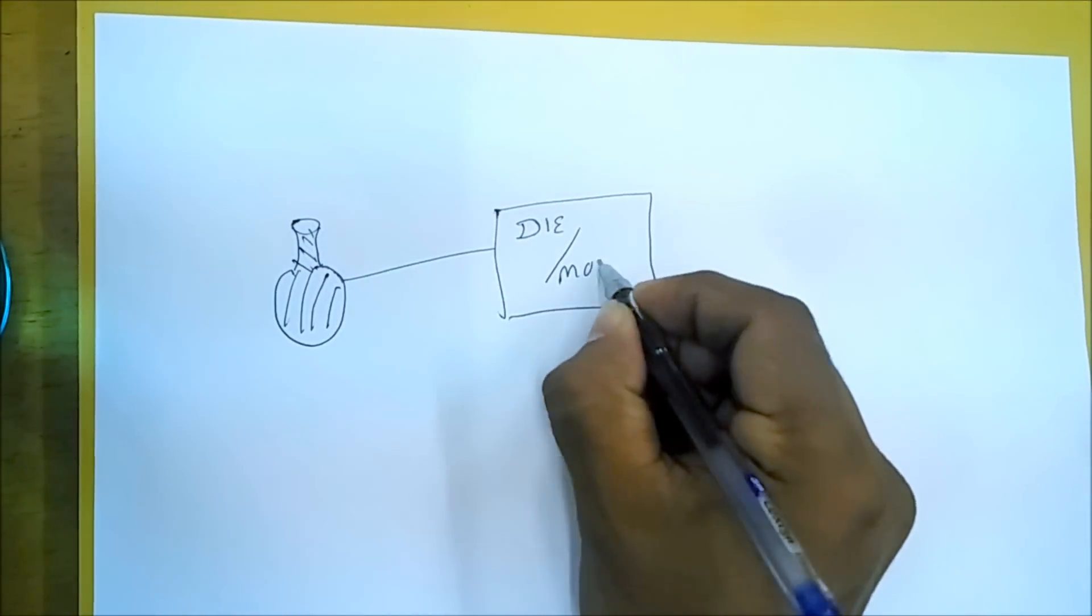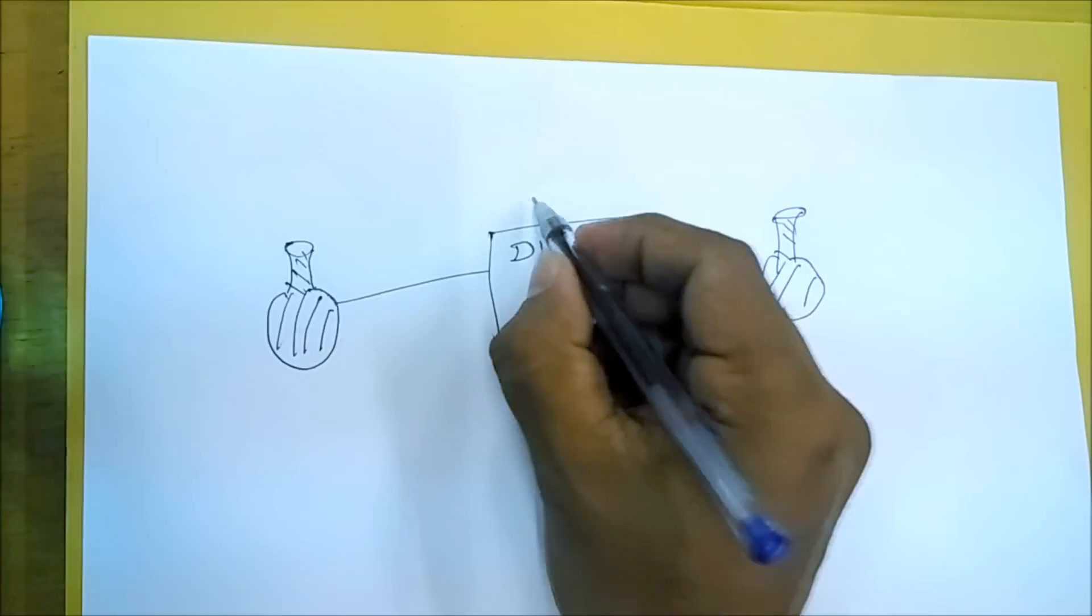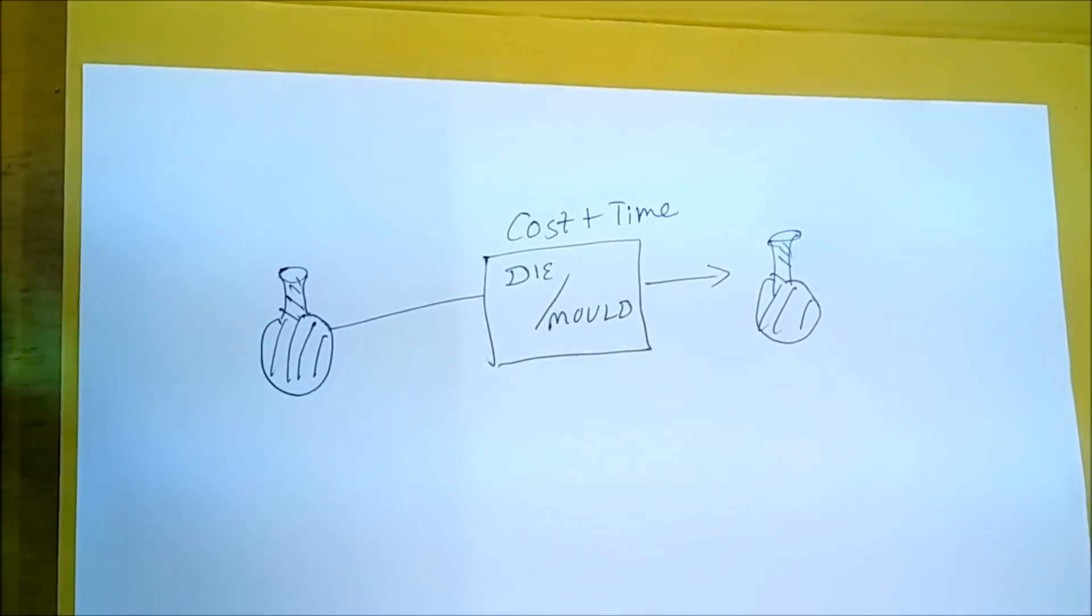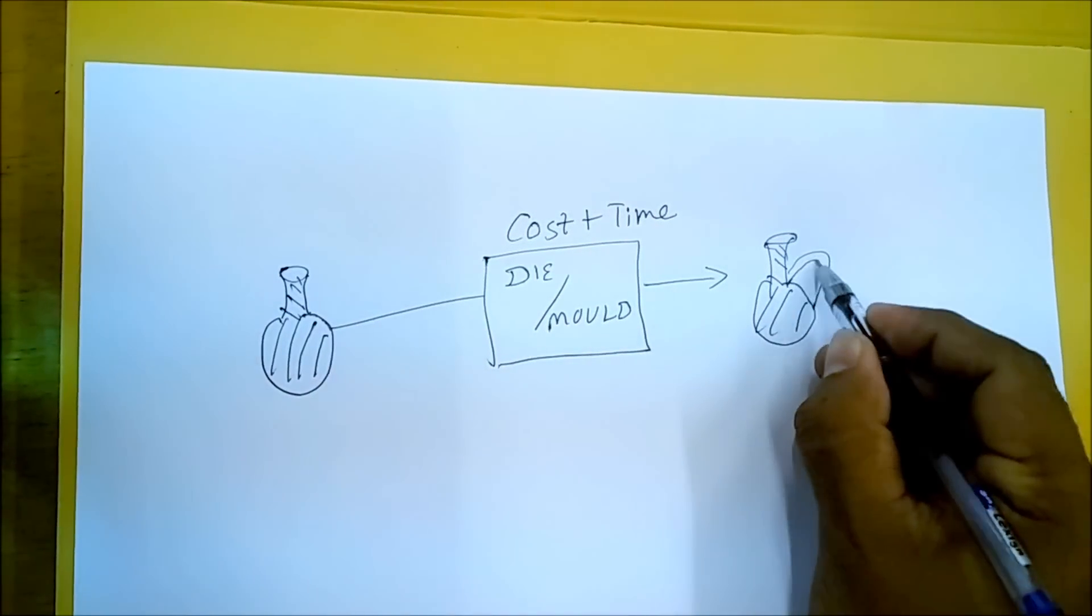With a traditional injection molding process, you create a design, then a mold, then you create a demo piece. If you want something to add, you repeat the cycle.